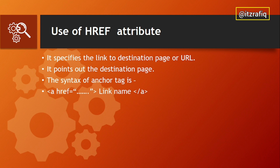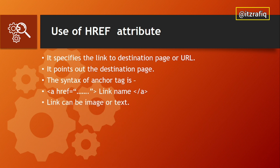The href attribute specifies the link to the destination page or URL. The syntax is: write the anchor tag with href in inverted commas containing the URL, then the link name, then close the anchor tag. A link can be both image and text. When we create an image link, instead of the link name text we write the img tag, so the image will appear in place of the text.